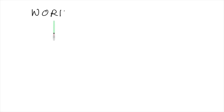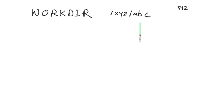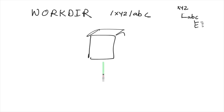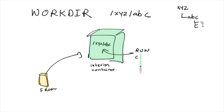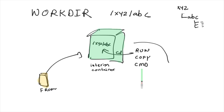WORKDIR defines the directory inside the build container from where all the other instructions and commands are run. A directory can contain multiple paths, such as a parent directory and subdirectories. When Docker launches the intermediate container using your FROM instruction, WORKDIR defines where all other commands run from. It is automatically created along with its parents, and all subsequent RUN, COPY, and CMD instructions are run from the WORKDIR, so you never need to use CD in a RUN instruction.